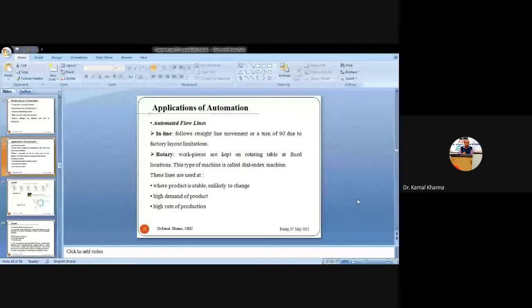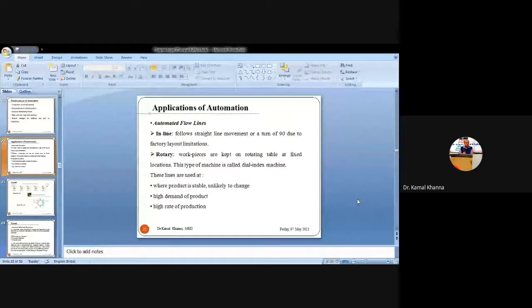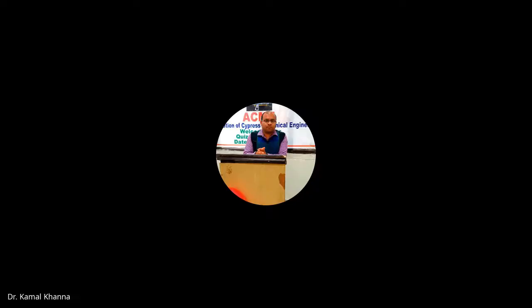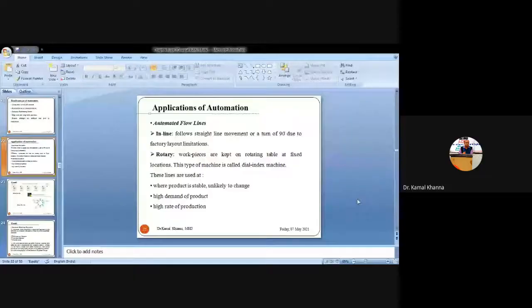Some automation applications will be discussed in the following slides. The first application is how the industry is becoming automated across different sections, making the core of the industry competitive in the global market — meeting challenges of uncertain markets, customer preferences, shorter delivery dates, and providing products at optimum cost with superior quality.